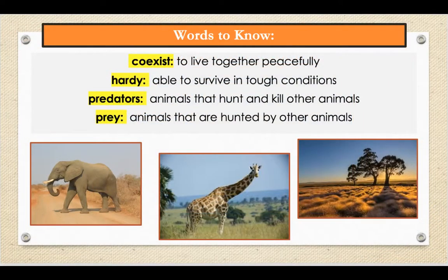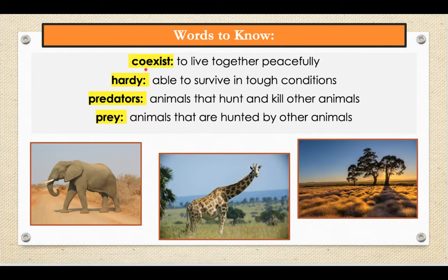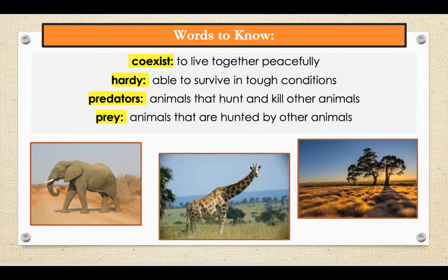As always, let's review some of the words that we are going to hear in our story today. The first word is coexist. Coexist means to live together peacefully. An example of this word: the cat and dog were able to coexist in my grandmother's house. Our next word is hardy. Hardy means able to survive in tough conditions. An example: cacti are hardy plants able to survive the harsh conditions of the desert.